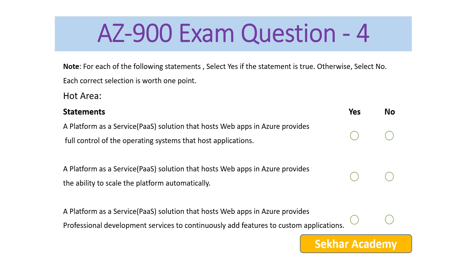AZ-900 exam question number four. For each of the following statements, select Yes if the statement is true, otherwise select No. Each correct selection is worth one point. The first statement: a Platform as a Service (PaaS) solution that hosts web apps in Azure provides full control of the operating system that hosts applications. Since PaaS does not give control of the operating system — that falls under IaaS — the answer is No.